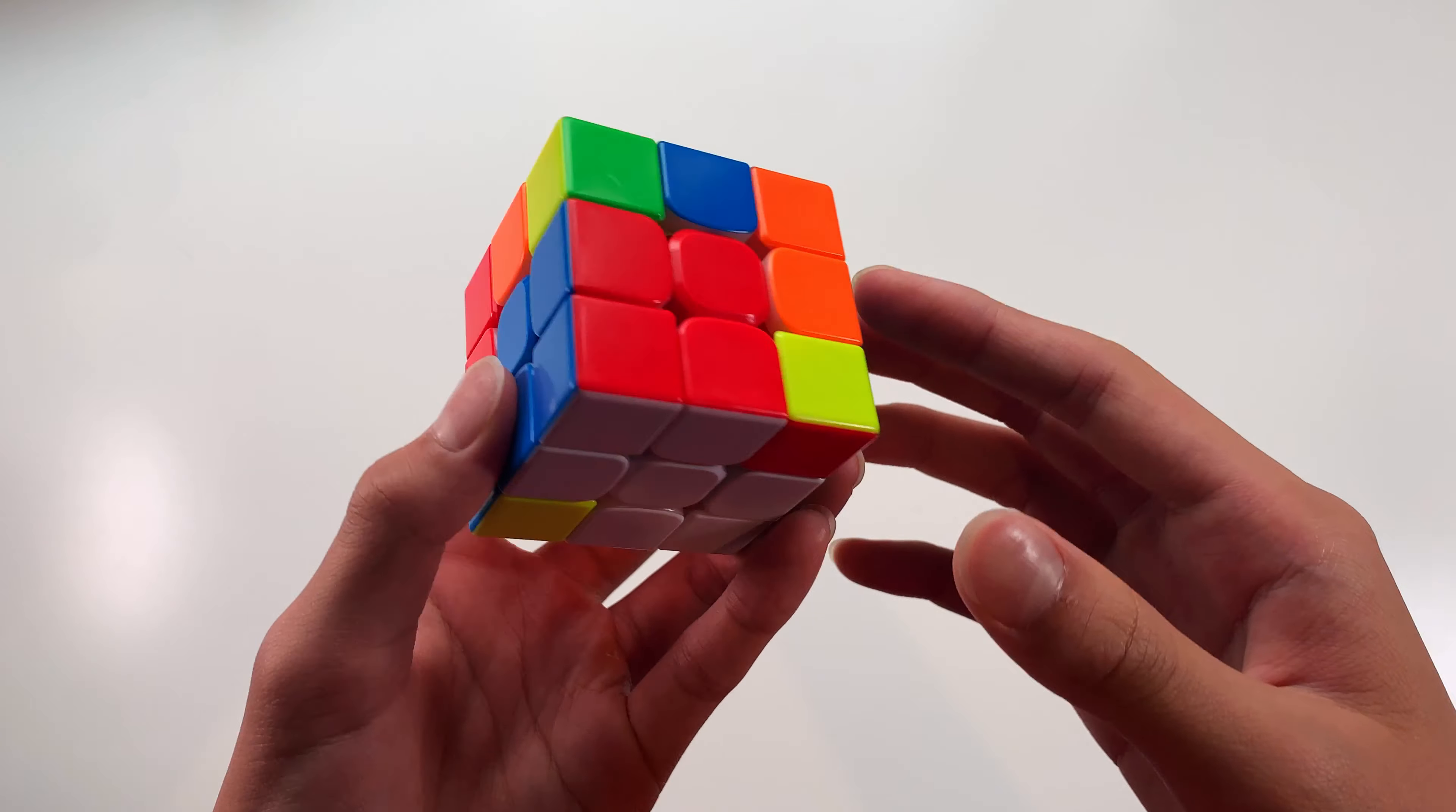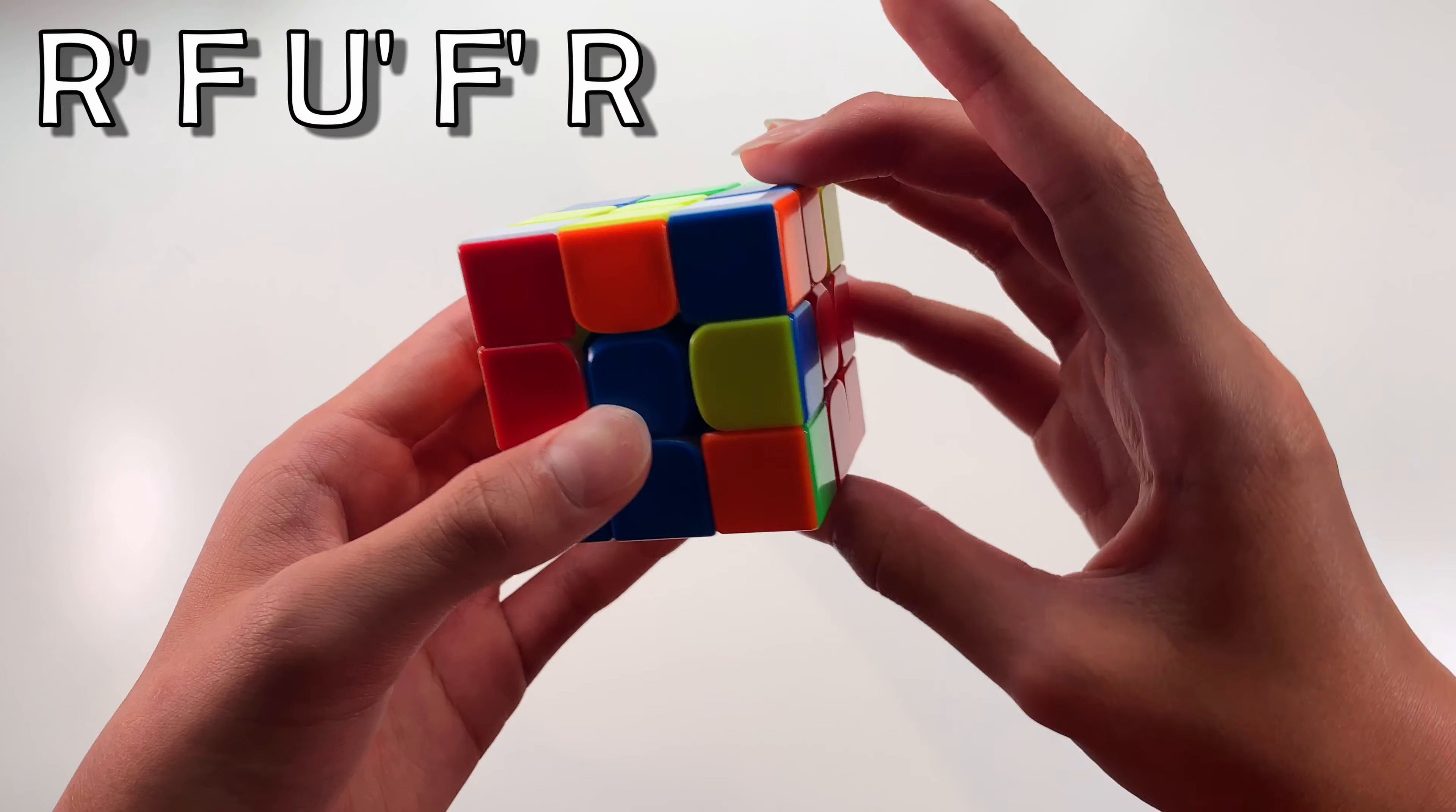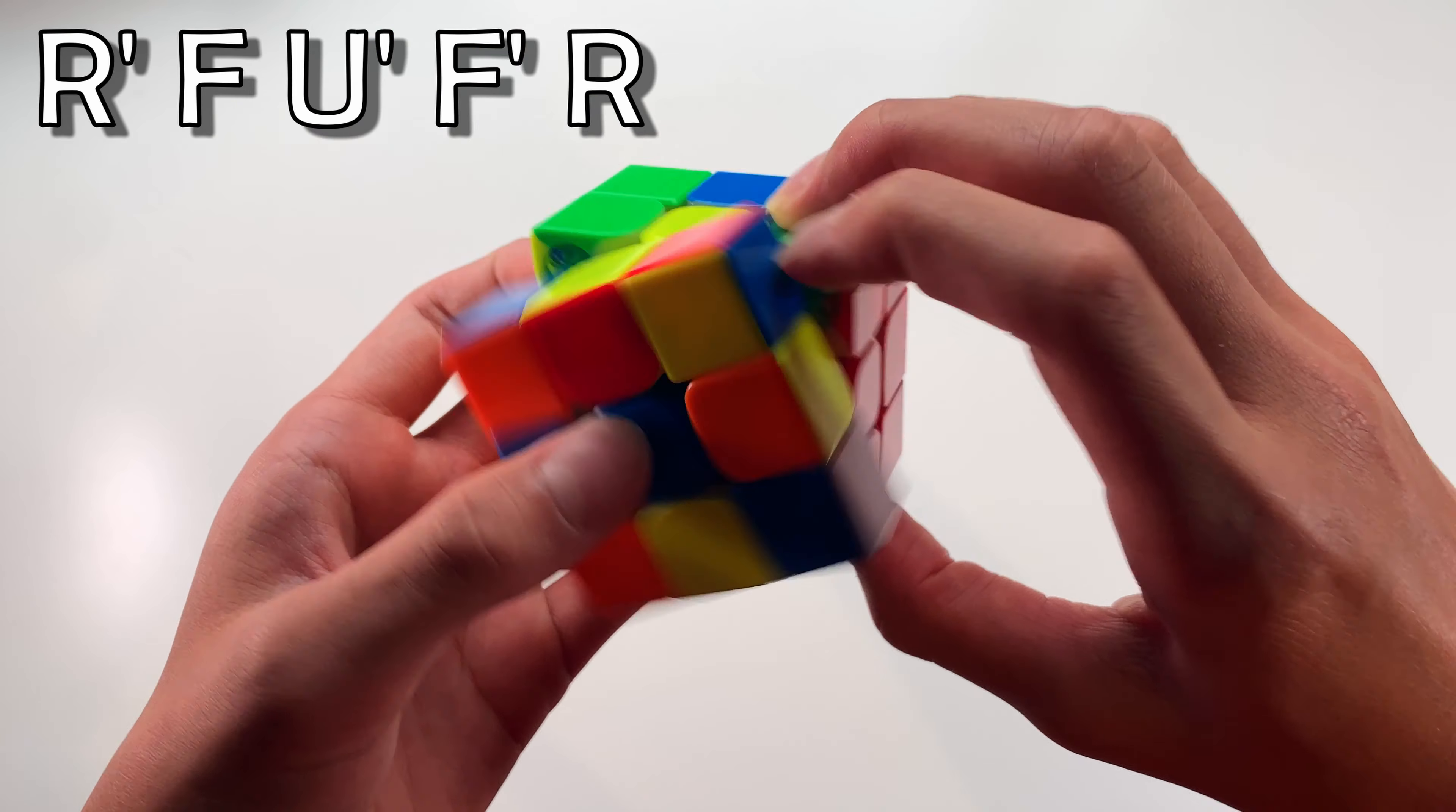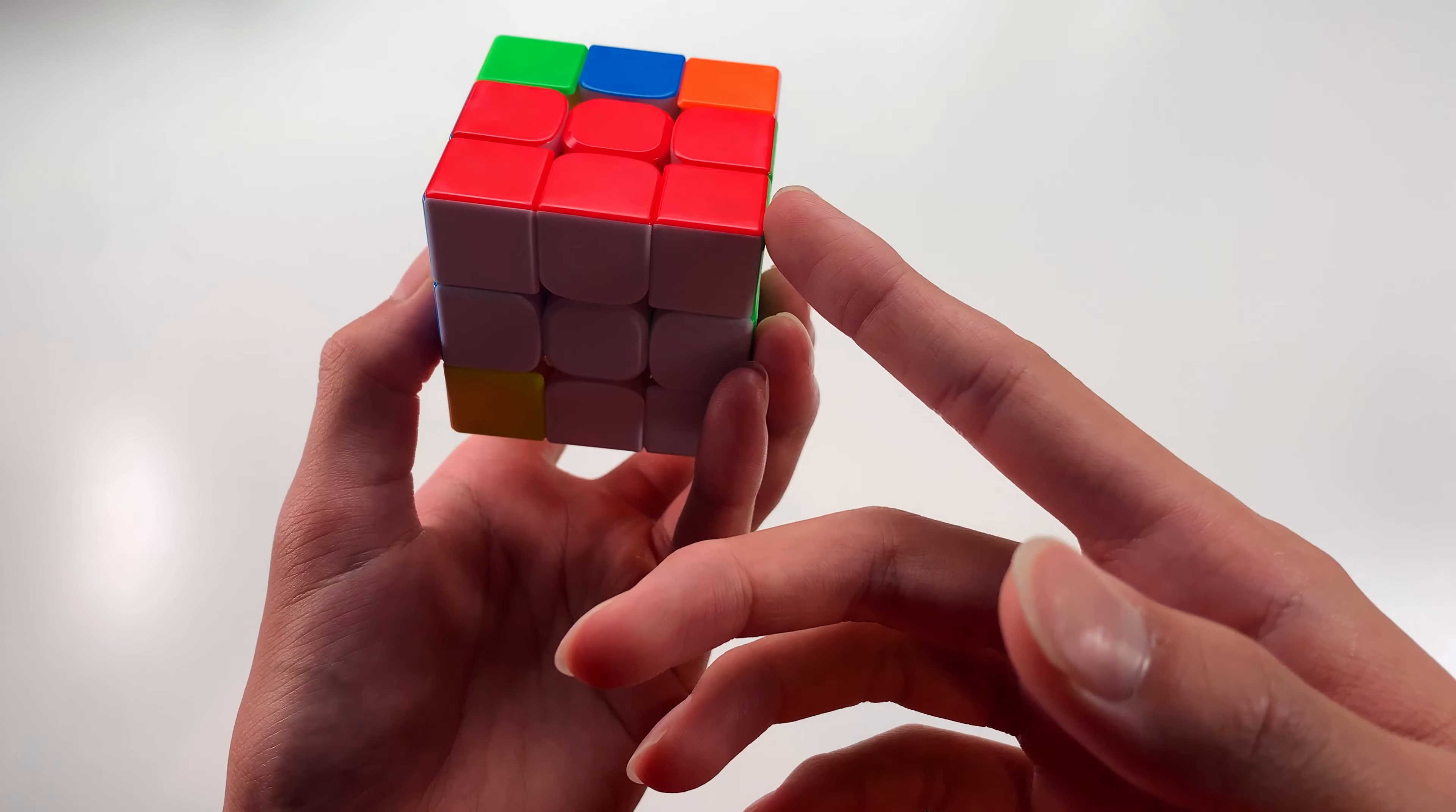So what I like to do is, from this angle, I'll do R' F, and then I'll just connect this pair over here, F' R, and that solves the pair into the back.